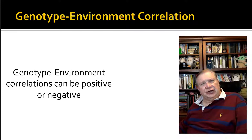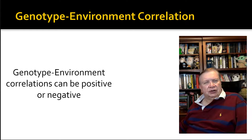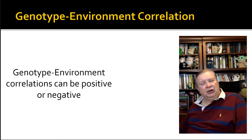To sum this section up: genotype-environment correlations can be positive or negative — they can increase behaviors by being positive, or decrease behaviors by being in an environment that doesn't fit the gene. More and more we hear about the effects of genes on behavior, and we have to remember it's an extremely complex area. I've given you an overview here, but it's been a very simplistic one. Hopefully we'll see you next time in Personality Psychology. Bye now.